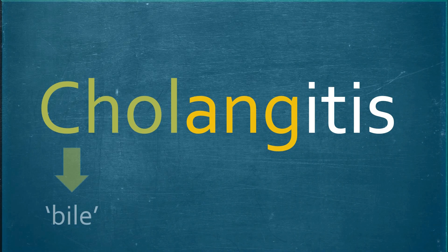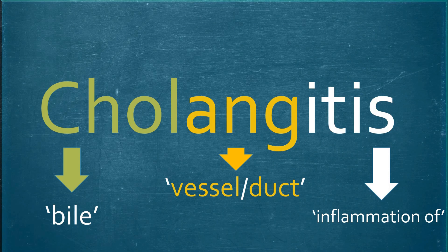Cholangitis is therefore inflammation of the vessels of the biliary system. This is in contrast to cholecystitis, where the 'cyst' part of the word refers to a fluid container, meaning the gallbladder — hence inflammation of the gallbladder.